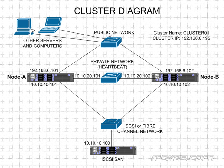Now, you might be wondering how the clients know to connect to node A when node A is called the active node, meaning that the clustered application is running on it. Well, they use a virtual name and a virtual IP address. This is different than virtual machines — it doesn't have anything to do with that. It's a name and IP address that can be owned by any node. The node that owns it is called the active node; the node that doesn't own it is called the passive node. The passive node is just waiting for a failure to occur and to take over this virtual name and IP address.